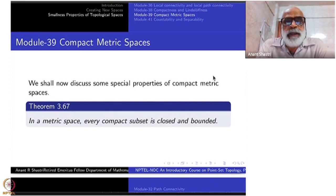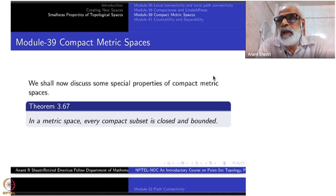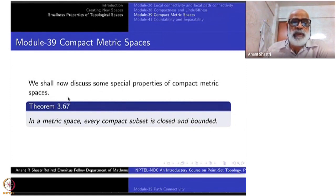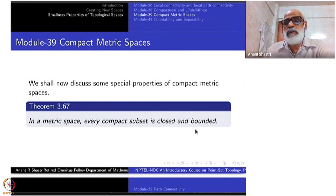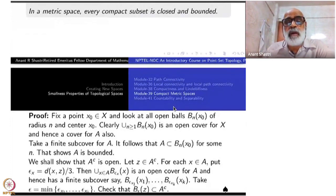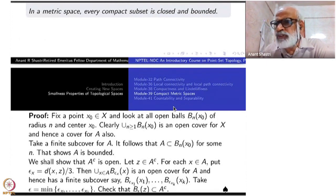In a metric space, every compact subset is closed and bounded. I could not use the words closed and bounded in an arbitrary topological space. As soon as I have a metric space, I can use them, and suddenly a compact subset is closed and bounded. Many of these things you must have seen at least for R^n, but now for any compact metric space, the proof will be similar.